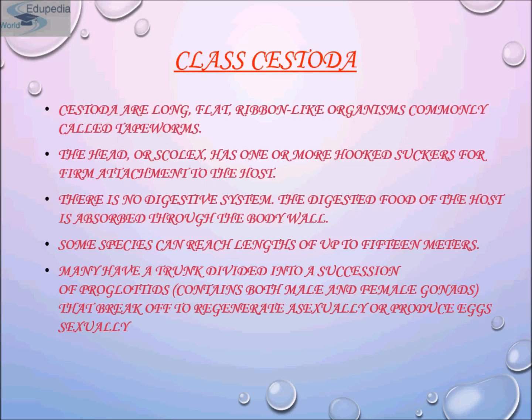The head, or scolex, has one or more hooked suckers for firm attachment to the host. There is no digestive system; digested food of the host is absorbed through the body wall by the cuticle. Some species can reach a length of up to 15 meters. Many have a trunk divided into a succession of proglottids that contain both male and female gonads, which break off to regenerate asexually or produce eggs sexually.